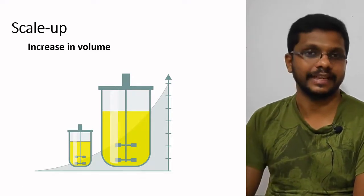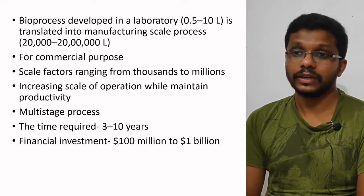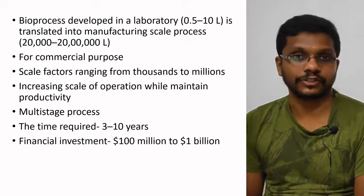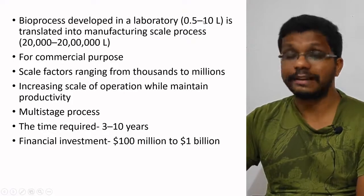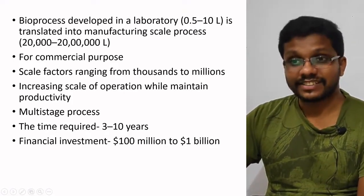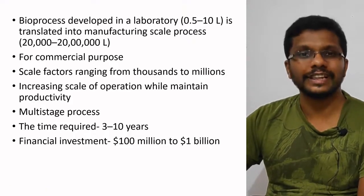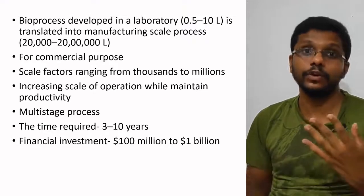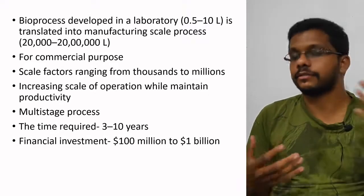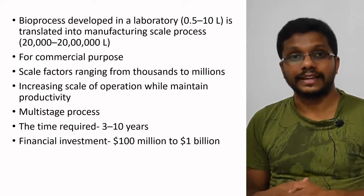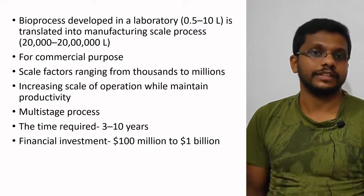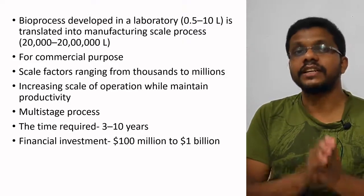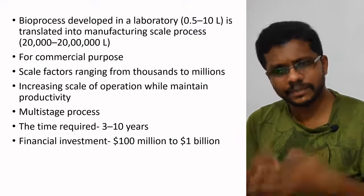The process of increasing the volume of fermentation for commercial purposes is called scale-up. In bioprocess development, laboratory scale is around 0.5 to 10 liters, while manufacturing or commercial scale is like 20,000 to 20 lakh liters. Some bioproducts, especially low-value high-volume products like fuel ethanol or citric acid, are required in huge quantities to make production profitable.